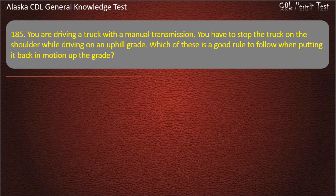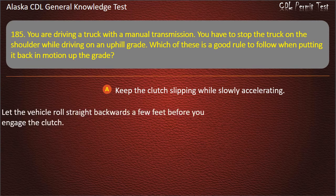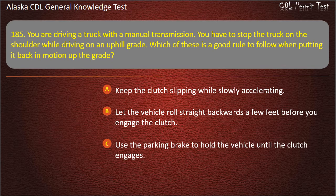Question 185. You are driving a truck with a manual transmission. You have to stop on the shoulder while driving on an uphill grade. Which is a good rule to follow when putting it back in motion up the grade? Keep the clutch slipping while slowly accelerating; let the vehicle roll straight backwards a few feet before engaging the clutch; or use the parking brake to hold the vehicle until the clutch engages. Answer: Use the parking brake to hold the vehicle until the clutch engages.